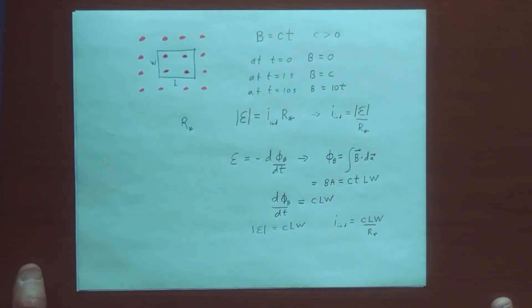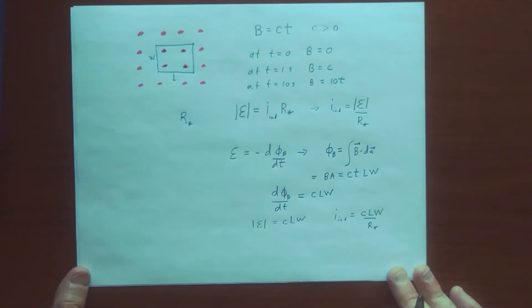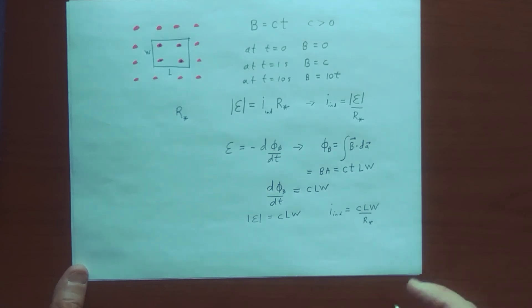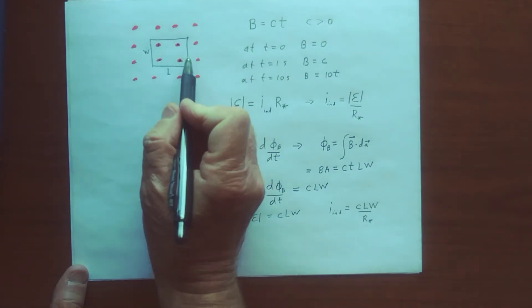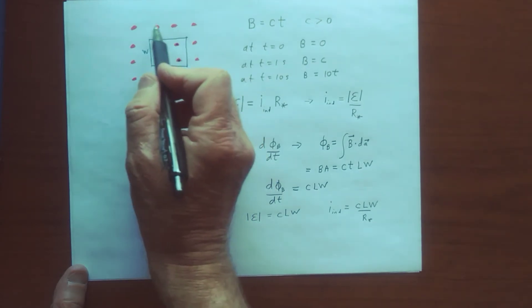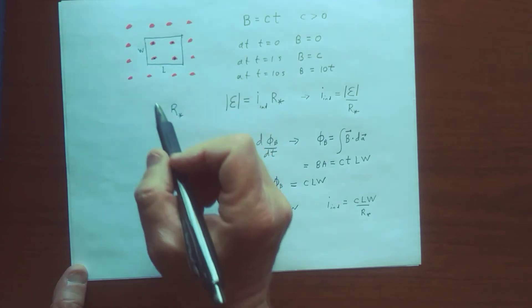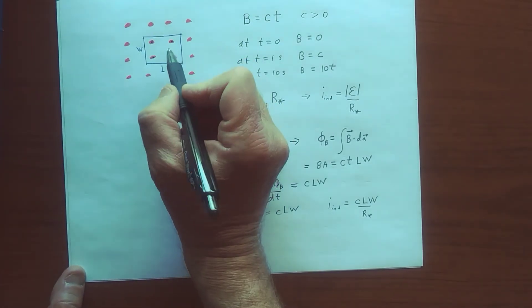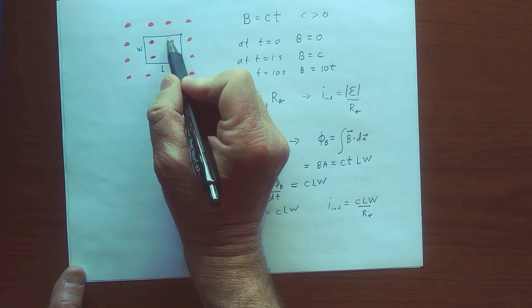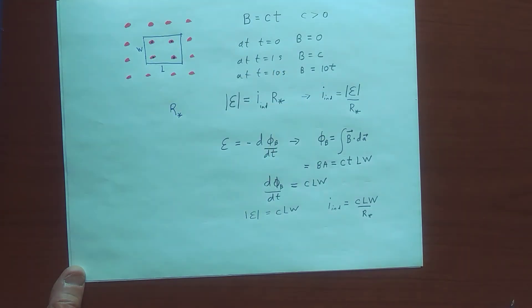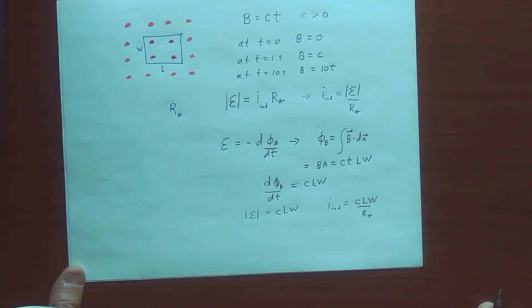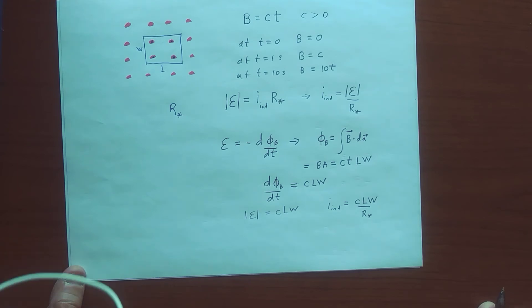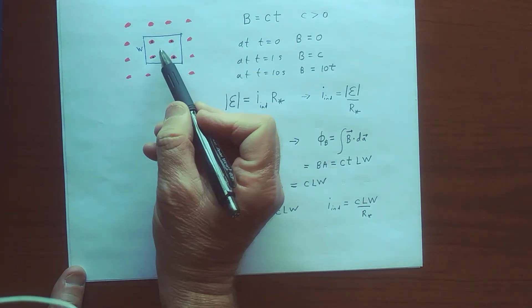And we can get a sense of the direction of the induced current by recognizing that nature doesn't like a change in the magnetic flux. And so this induced current is going to flow in the loop, either this way, so counterclockwise or clockwise, such that its magnetic field in this region is such that the magnetic flux stays the same. So it's going to attempt to create a magnetic field there that points in a direction such that the magnetic flux isn't changing. And because the magnetic flux is increasing,